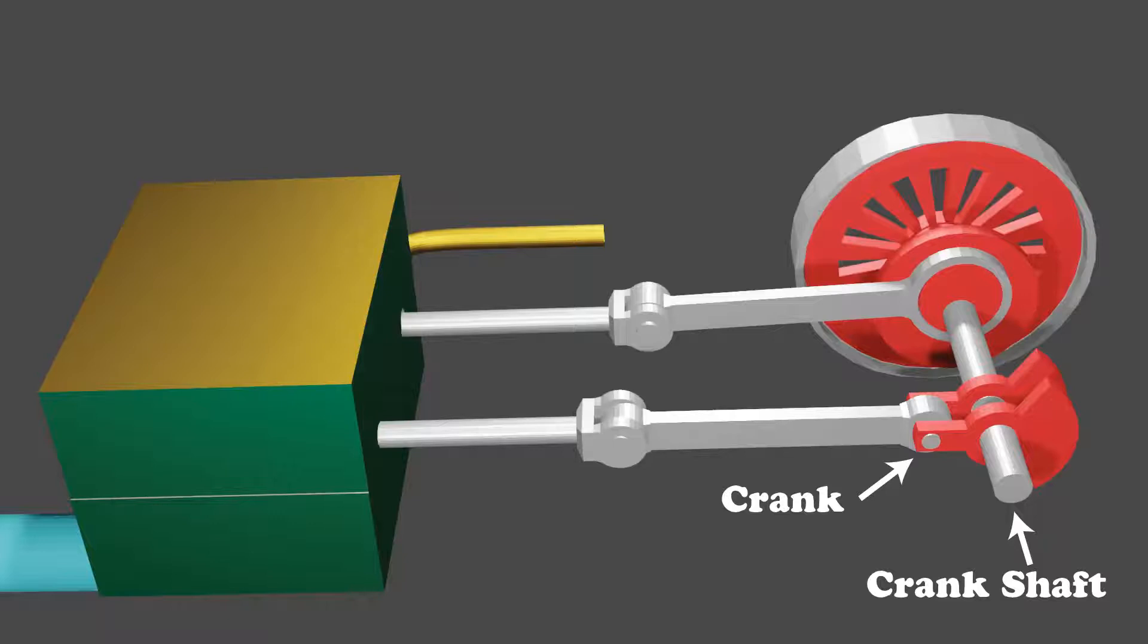The crank is there to change the horizontal movement of the piston into rotary movement of the crankshaft. Notice the counterweights used to keep the crankshaft balanced.